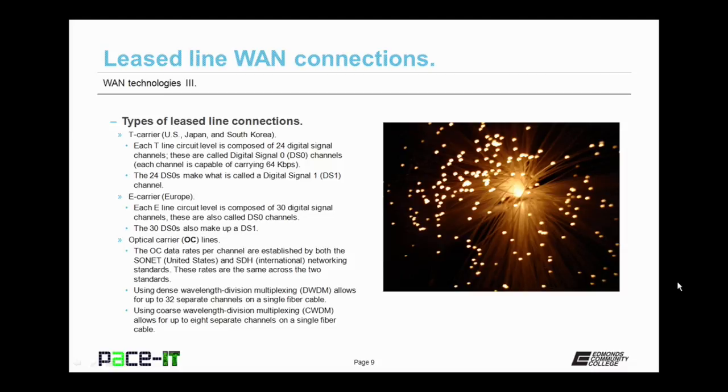In Europe, we have E-carrier lines. Each E-line is composed of 30 digital signal channels. These are also called DS0 channels. The 30 DS0 channels also make up what is called a DS1 channel.